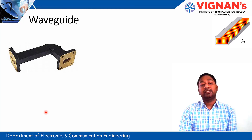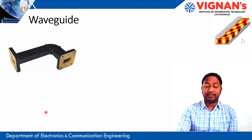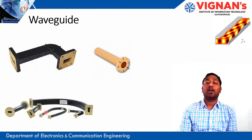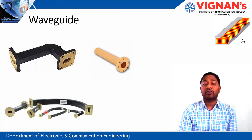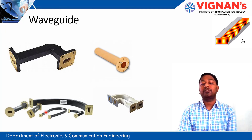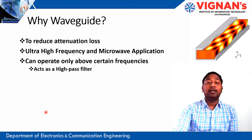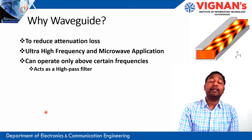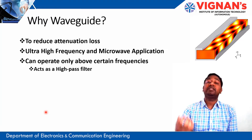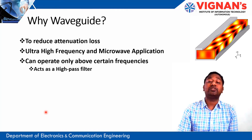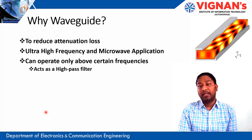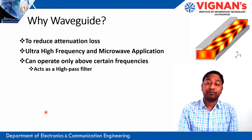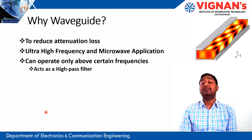There are different types of waveguides available — circular, rectangular, and other shapes. For our analysis, we divide them into two categories: rectangular waveguide and circular waveguide. Waveguides are used for high-frequency applications. They only work above a certain frequency; below that frequency, the waveguide does not operate. Another important aspect is that waveguides are used to reduce attenuation losses.